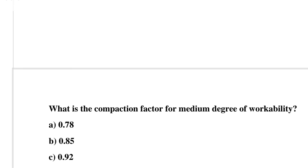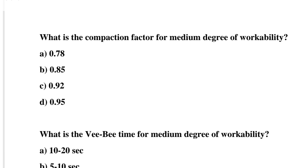So next question: what is the compaction factor for medium degree of workability? Option A: 0.78, option B: 0.85, option C: 0.92, option D: 0.95. So the correct answer is option C, 0.92.